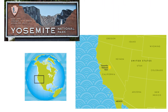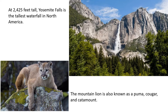We're now going to travel south to California to visit Yosemite National Park. Yosemite National Park is best known for its waterfalls, its giant sequoias, and a vast wilderness area. At 2,425 feet tall, Yosemite Falls is the tallest waterfall in North America. The mountain lion is also known as a puma, cougar, and a catamount. You will see them running through Yosemite National Park.